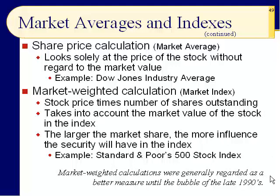Market-weighted calculations were generally regarded as a better measure until the bubble of the late 1990s. Back in Chapter 4, we said that one stock was responsible for 10% of the return on the Standard & Poor's 500 in 1998. So there are 500 stocks, and one stock represents 10% — that's the problem. As the company gets larger, it has a bigger influence. Nothing is perfect. If you didn't really catch the subtle difference between an average and an index, don't worry — 99.99% of the time you don't care.